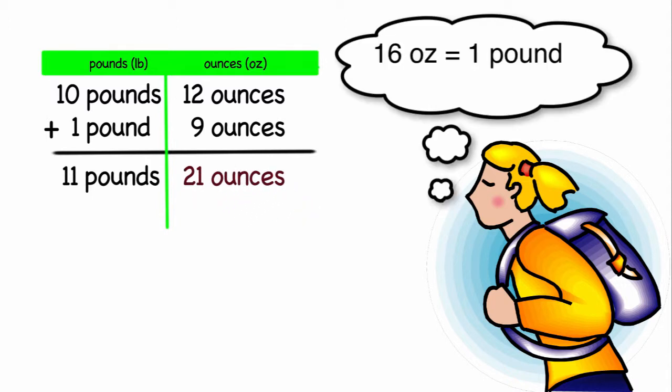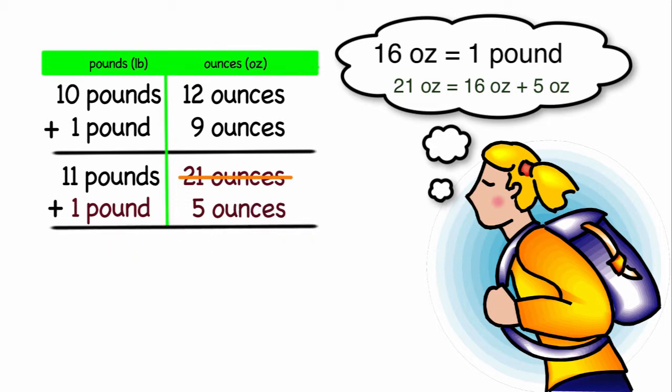Well, 16 ounces make a pound. So that's more than a pound. 21 ounces is one pound with five ounces left over. So I'm going to add that to the 11 pounds, giving us a total of 12 pounds, five ounces.